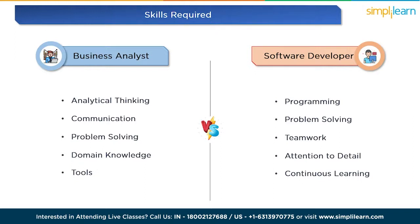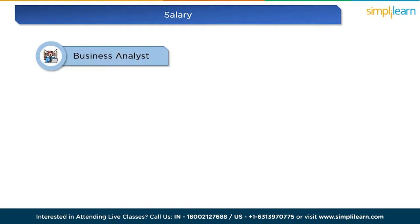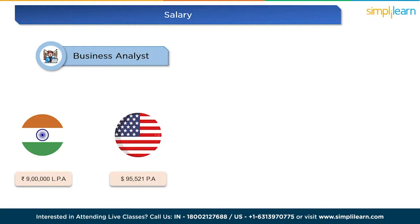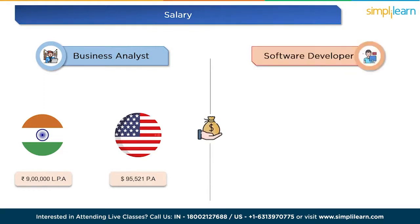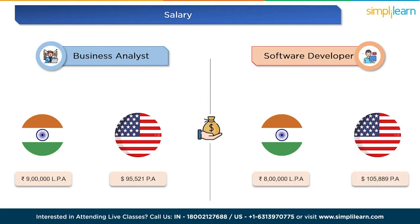Now let's talk about salary variations. Salaries can vary depending on factors such as experience, location, and industry. Business analysts earn a competitive salary — according to Glassdoor, the average salary of a business analyst is around 9 lakh rupees per year in India, and around $94,521 per annum in the United States. Software developers also earn a rewarding salary — around 8 lakh rupees per year in India, and around $105,889 per annum in the United States. Senior developers and those with niche skills can command even higher salaries.